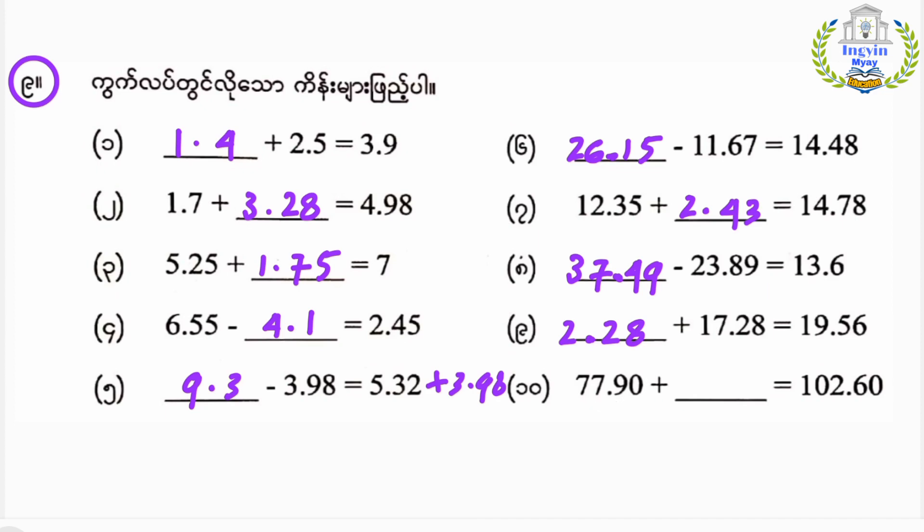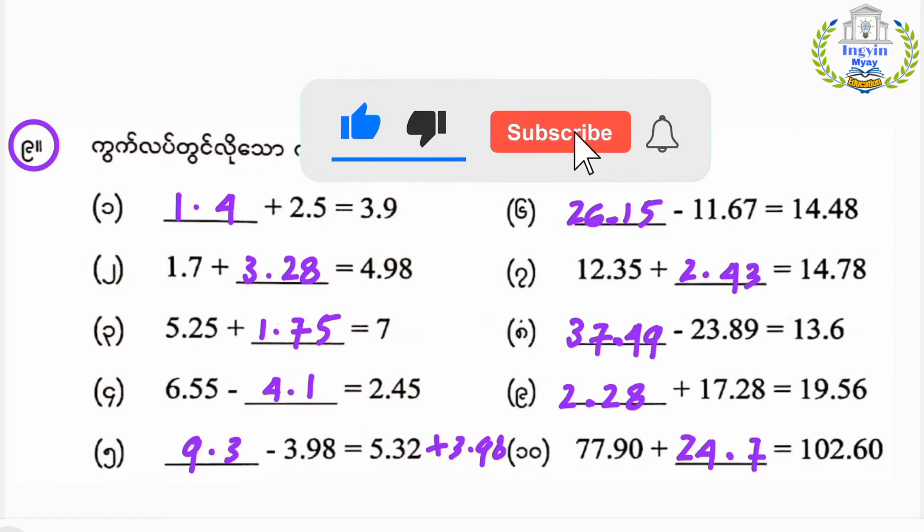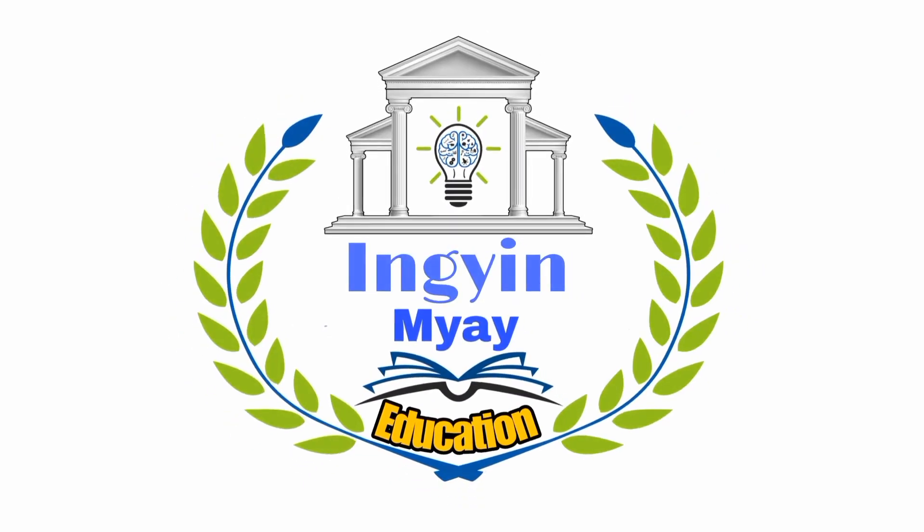Seventy-seven point ninety plus something equals one hundred two point sixty. One hundred two point sixty minus seventy-seven point ninety equals twenty-four point seven.